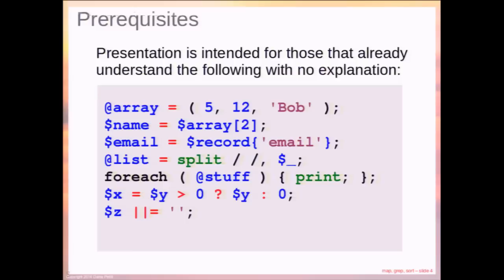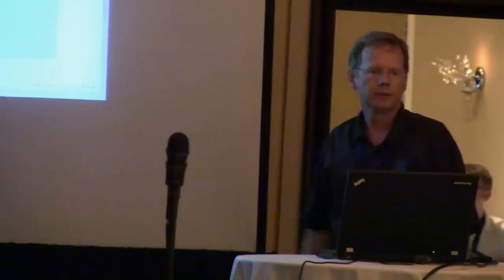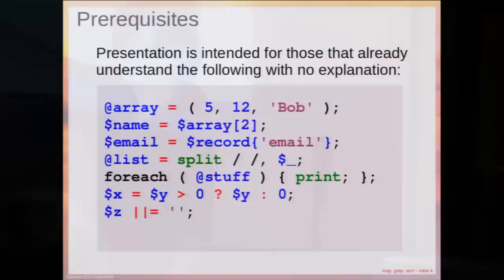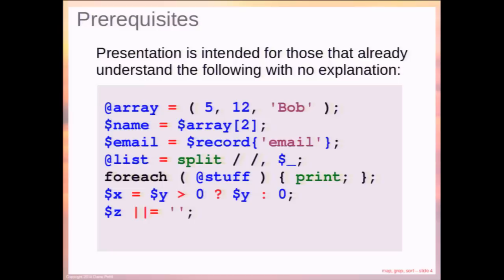Here are the prerequisites. If you understand all this Perl code, you'll be fine. Things like initializing an array, indexing into a single element of the array, indexing into a single element of a hash, using split, using a foreach — and notice we have a default foreach where we don't specify what we're printing, so it prints dollar underscore. Using the ternary operator — question mark colon — and using double vertical bars, which is an or-equals, same as dollar z equals dollar z or empty string.